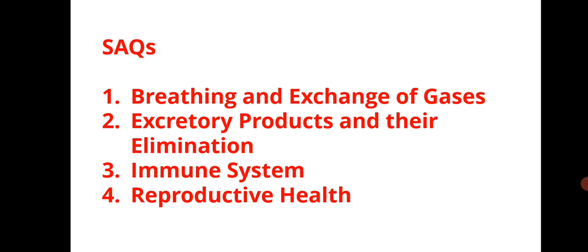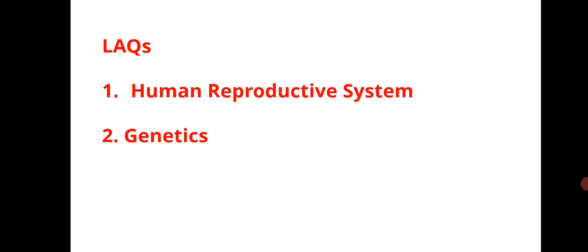For the SAQ section, the important chapters are breathing and exchange of gases, excretory products and their elimination, immune system, and reproductive health. If you practice these four chapters, they will definitely give you 24 marks from the SAQ section.